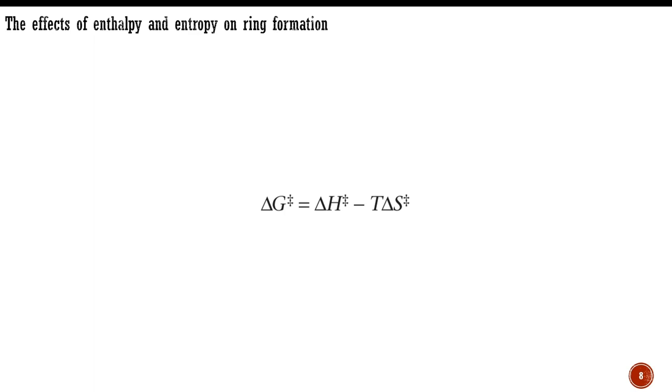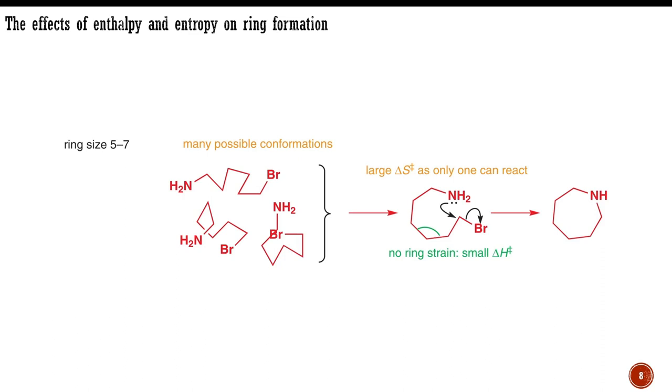The second factor is one that depends on the entropy of activation, ΔS‡, how much order must be imposed on the molecule to get it to react. Think of it this way: a long chain has a lot of disorder, and to get its ends to meet up and react means it has to give up a lot of freedom. So, for the formation of medium and large rings, the entropy of activation is large and negative, contributing to large activation energy barriers and slow reactions.